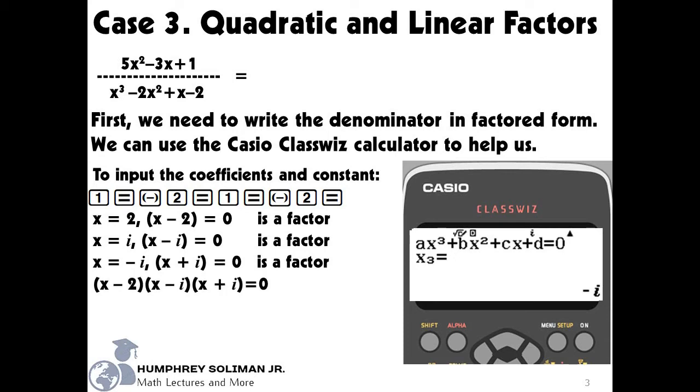Notice that we have imaginary numbers in the factors. So, we have to simplify this into a quadratic factor. By multiplying the factors with imaginary numbers, we will have x squared plus 1.